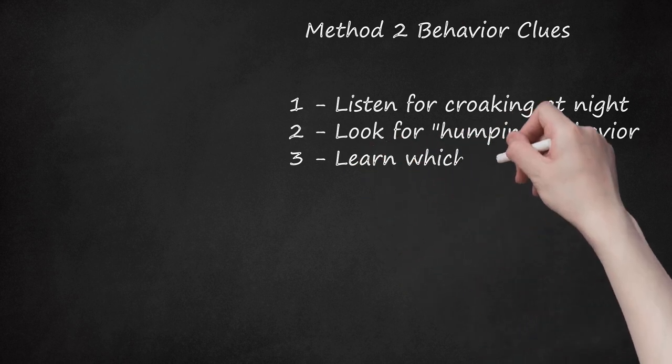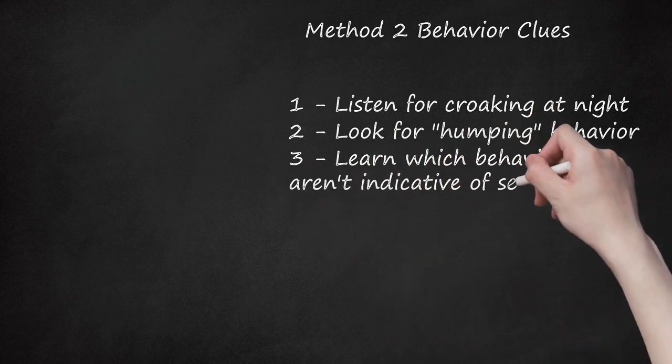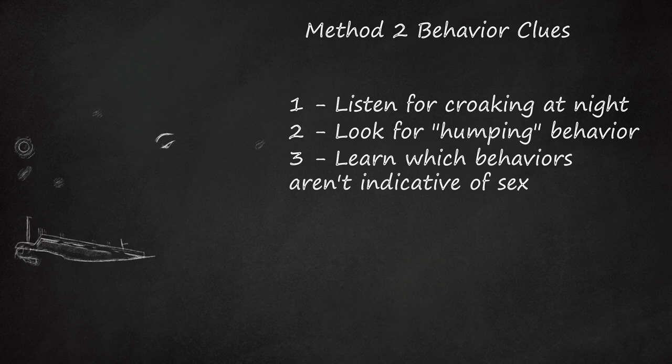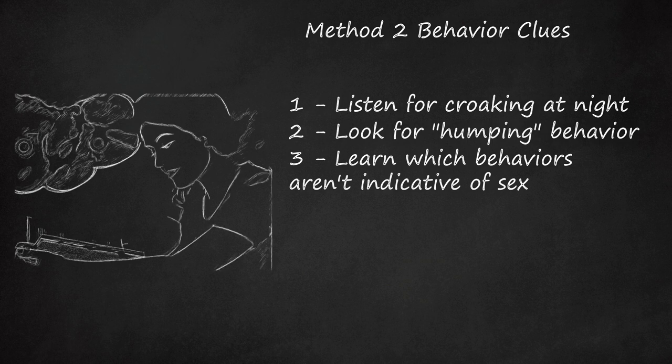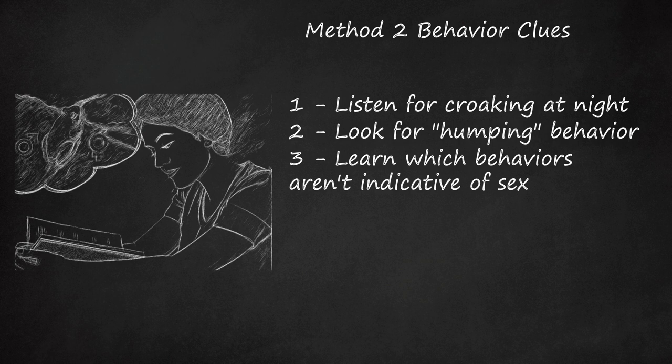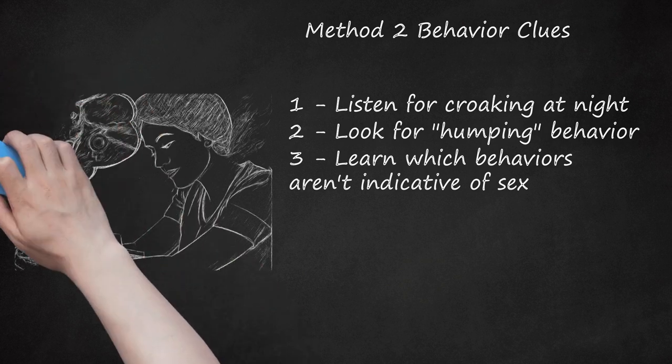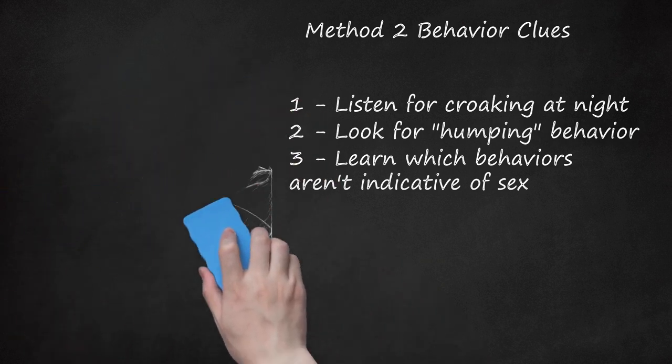Third, learn which behaviors aren't indicative of sex. Some behaviors may seem like things that only male or female frogs would do, but in fact are not. A few of these are listed below. Both male and female frogs will defend themselves or attempt to run if threatened. Both male and female frogs shed skin. Both male and female frogs will attempt to camouflage themselves against similarly colored things. Male and female frogs of the same species have the same diet.